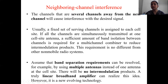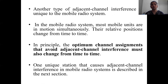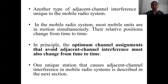Assuming band separation requirements can be resolved — for example, by using multiple antennas instead of one antenna at the cell site — there will be no intermodulation products. A truly linear broadband amplifier can realize this idea; however, it is a new evolving technology. Another type of adjacent channel interference is unique to the mobile radio system: mobile units are in motion simultaneously, so their relative positions change from time to time. The optimal channel assignments that avoid adjacent channel interference must also change adaptively from time to time as the positions of the mobile units change. This will be discussed in the next video.